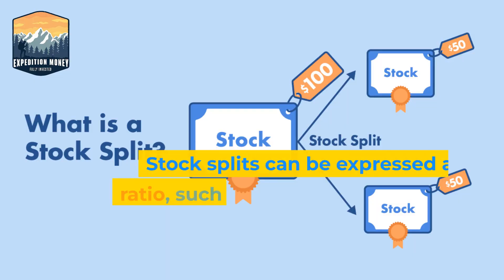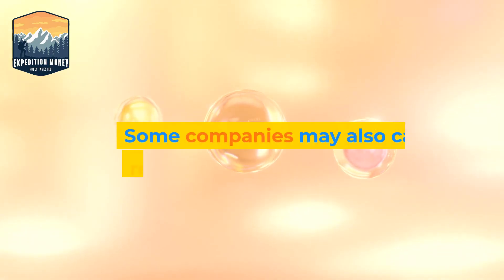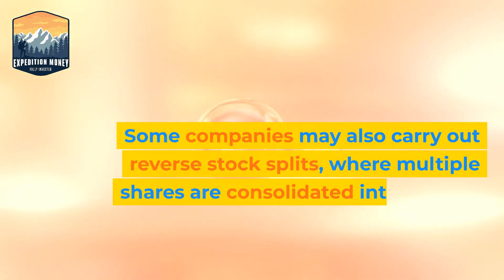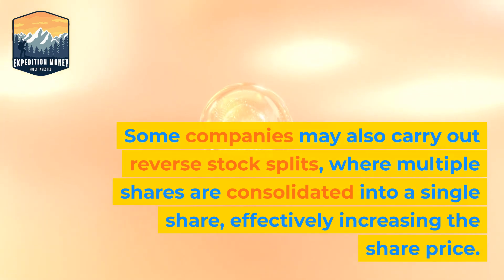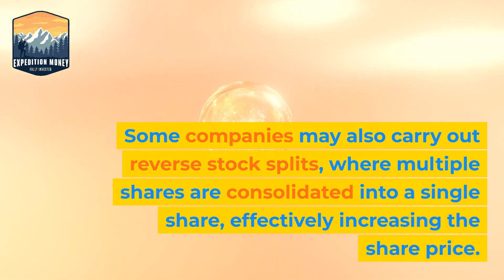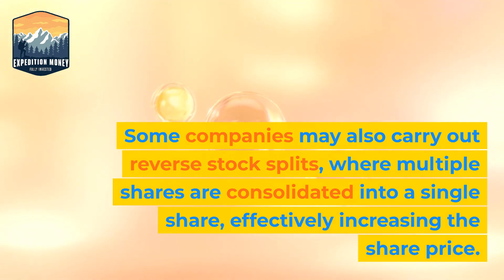Stock splits can be expressed as a ratio, such as two-for-one or three-for-one, or as a percentage, such as a 100% stock split. Some companies may also carry out reverse stock splits, where multiple shares are consolidated into a single share, effectively increasing the share price.